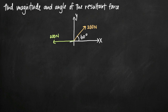Today we're going to be talking about how to find the magnitude and angle of a resultant force. In this particular problem, we've been given two forces, F sub 1 and F sub 2. F sub 1 is a force of 200 newtons, and the angle between this vector and the positive direction of the x-axis is 60 degrees. F sub 2 acts in the negative direction of the x-axis with a magnitude of 300 newtons.